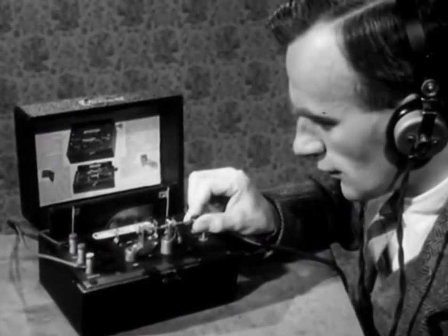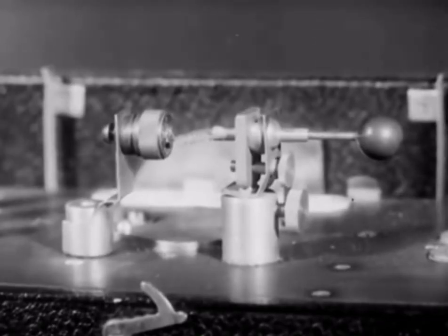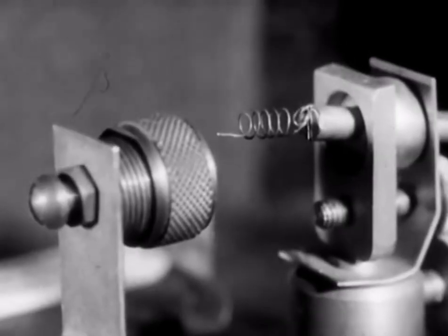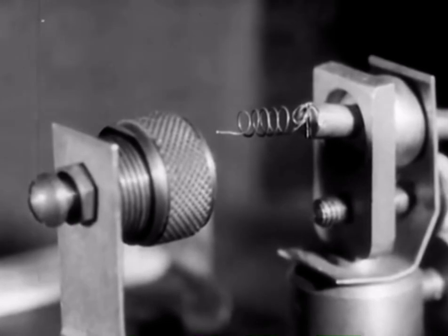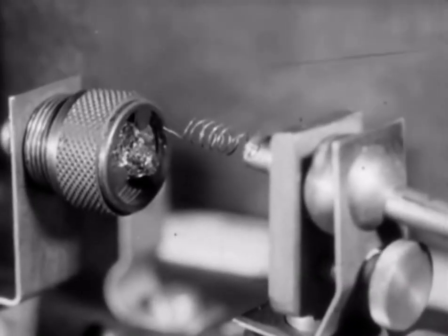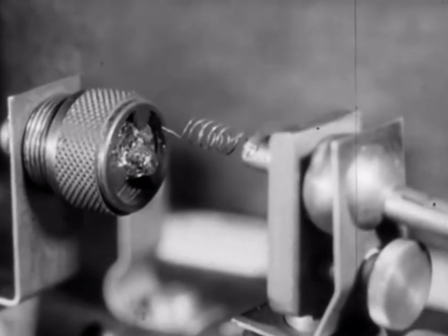This receiver is called a crystal set because it uses a crystal detector. It consists of a coiled springy silver wire known as the cat's whisker and a crystalline substance such as the natural mineral galena.